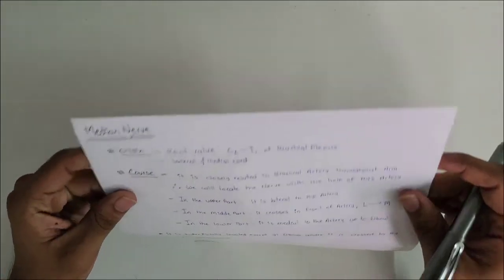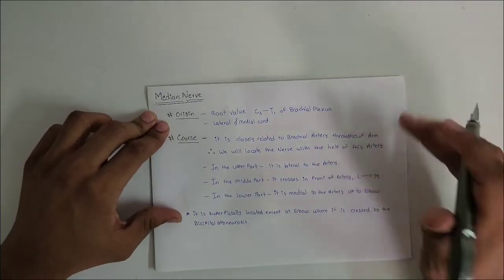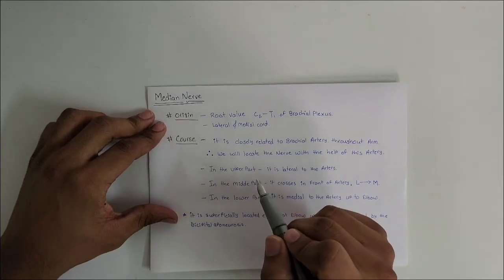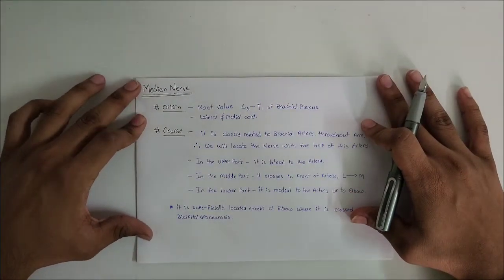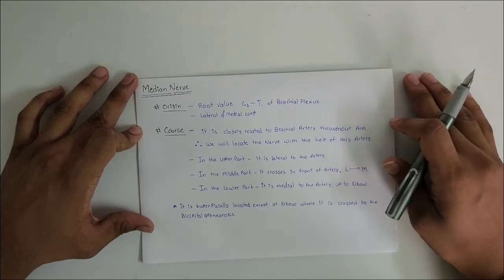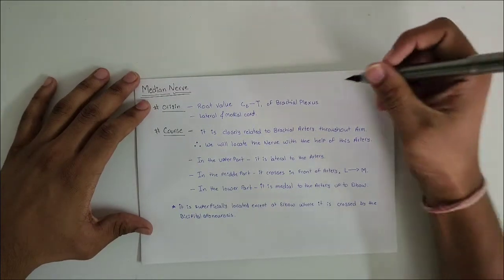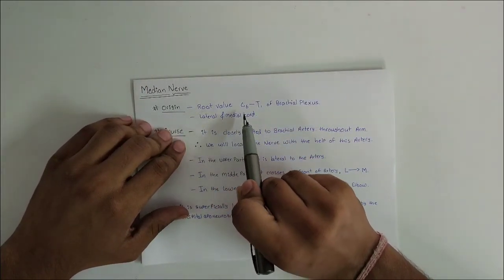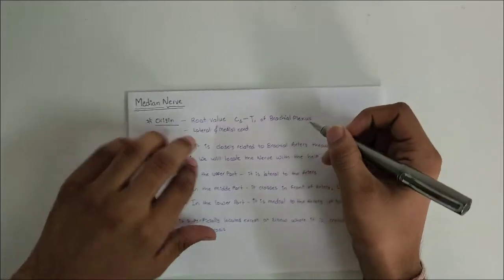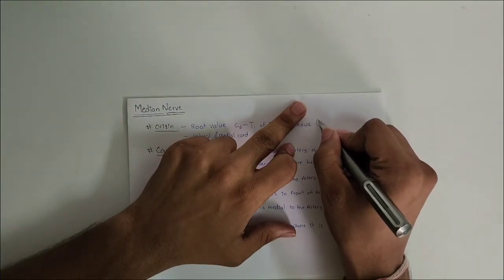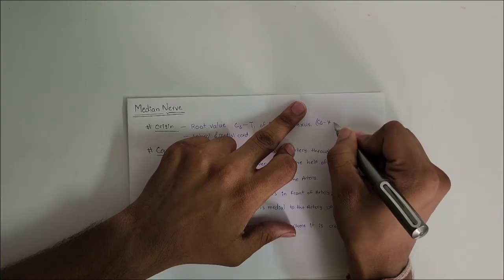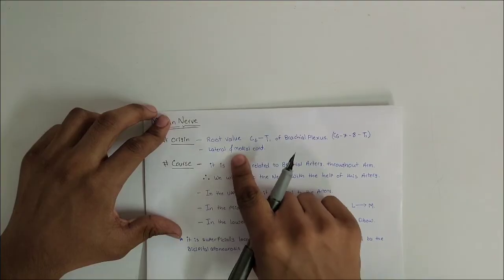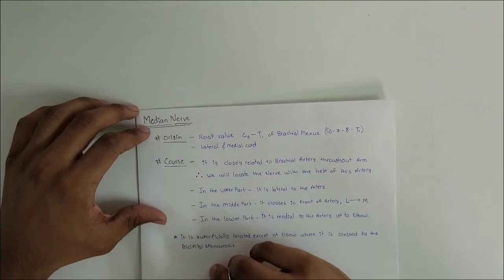Starting with median nerve origin. The root value is C6 to T1 of the brachial plexus — corresponding to C6, C7, C8, and T1. If you haven't seen my video on brachial plexus, go check that out. The lateral and medial cords combine together to form the median nerve.